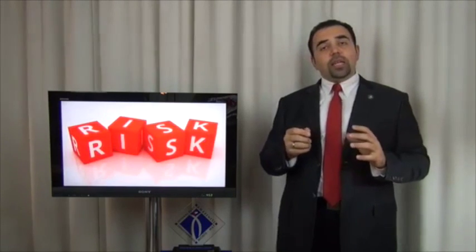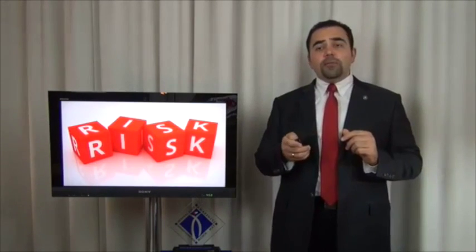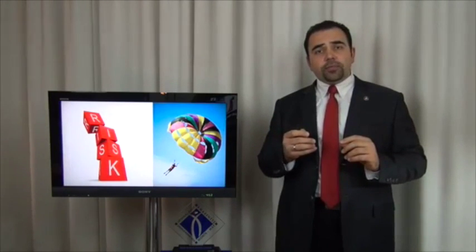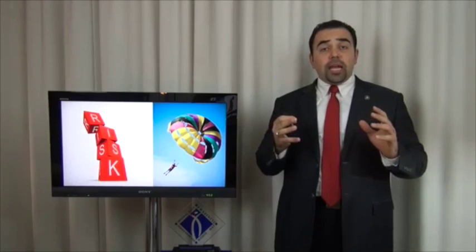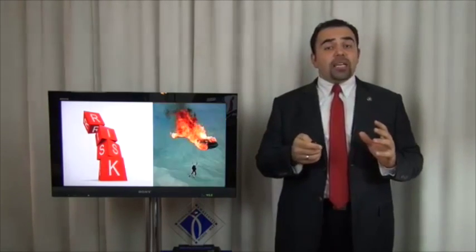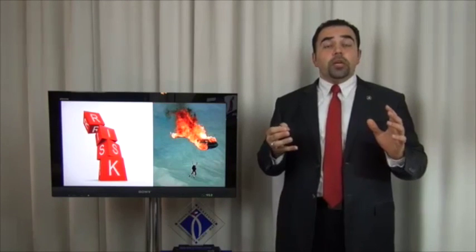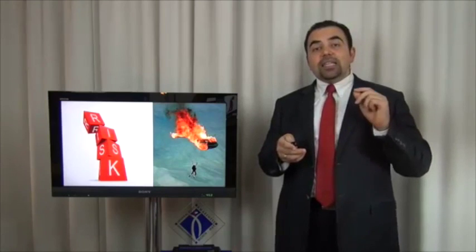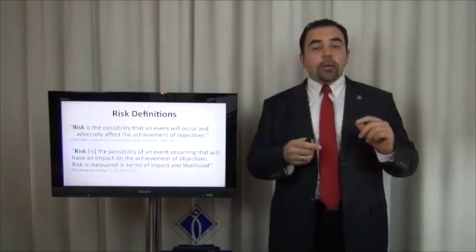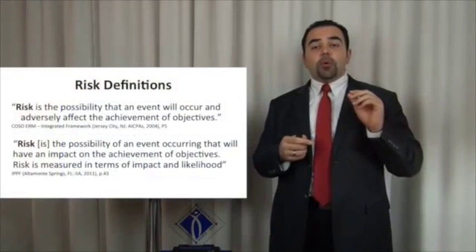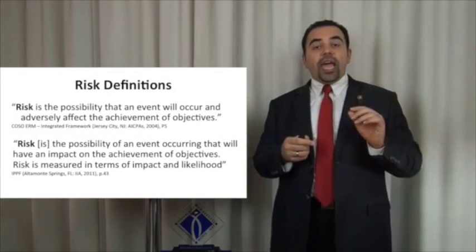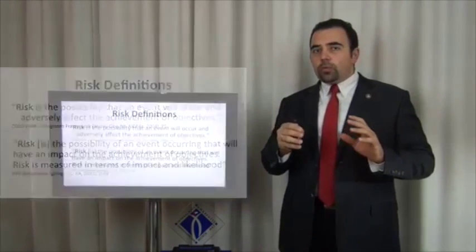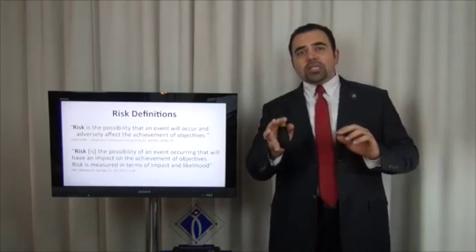Now let's understand what risk is. If someone is taking a parachute jump, many things can happen — lines can break, the person can have a heart attack — there are so many aspects. The definition of risk based on COSO ERM is: the probability that an event will occur and adversely affect the achievement of the objective. Risk is something negative.